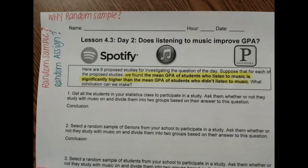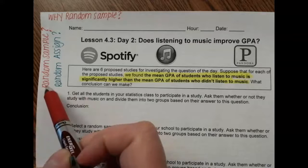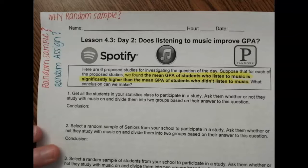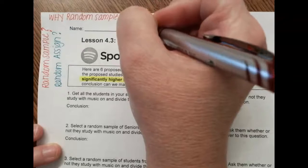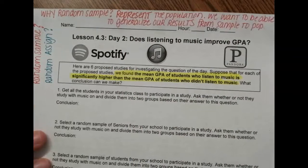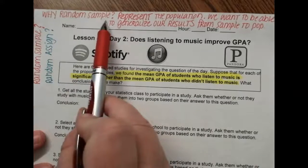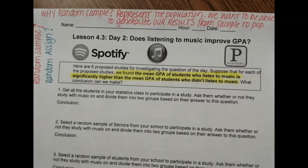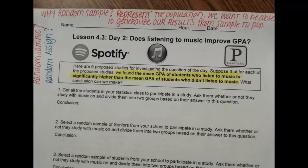Before we begin, a couple reminders. I wrote 'random sample' in red — why do we want a random sample? The purpose of random sampling is so we can get a representation of the population. We want to be able to generalize our results from our sample back to the population. That's really the reason why you do research: you want to find a solution that can work for a larger number of people.